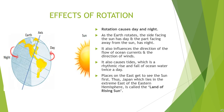Let us understand what are the effects of rotation. Rotation causes day and night. Now look at the screen and try to understand what I am trying to tell you. You can see the picture of the earth and sun both. As the earth rotates, the side facing the sun has day and the part facing away from the sun has night. It also influences the direction of the flow of ocean currents and direction of winds. It also causes tides, which is the rhythmic rise and fall of ocean water twice a day. Places on the east get to see the sun first, and so Japan, which lies in the extreme east of the eastern hemisphere, is called the land of the rising sun.